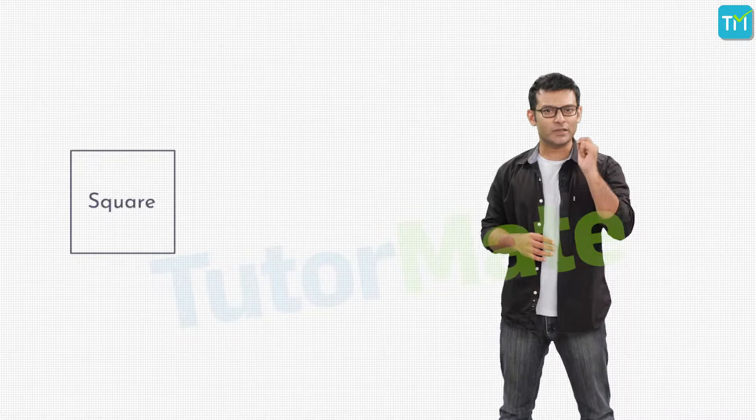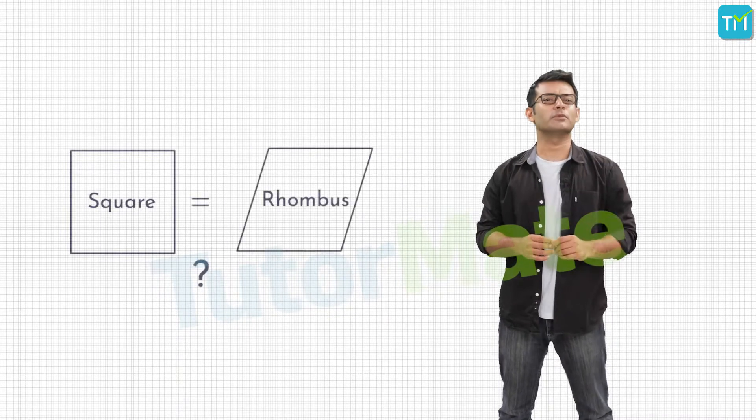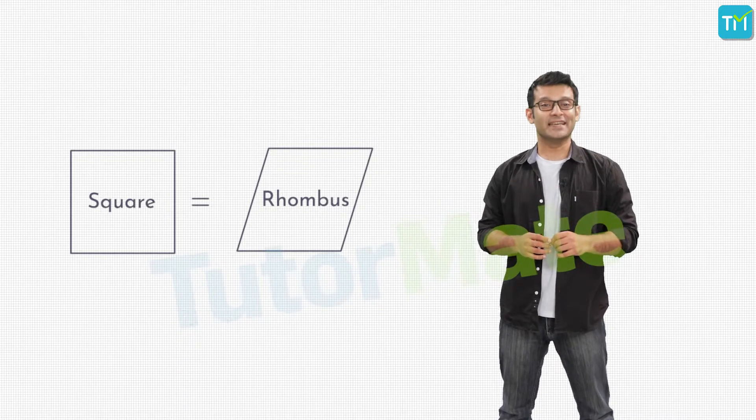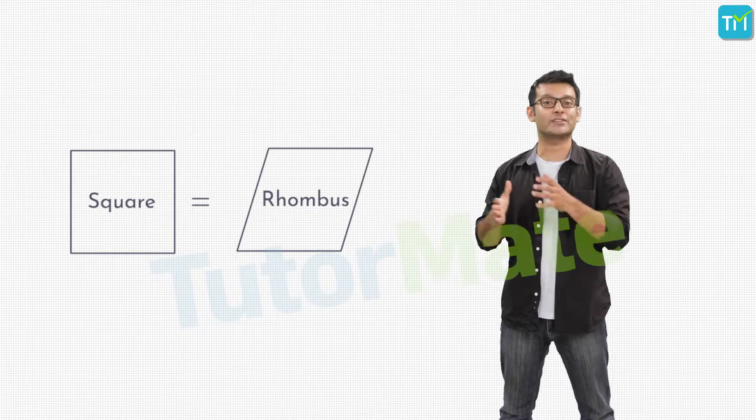Now that we have seen the different types of quadrilaterals, let me ask you a few questions. Can we call a square to be a rectangle also? And what about a rhombus? Can a square be a rhombus? Yes, the answer is it does qualify to be a rectangle as well as a rhombus.